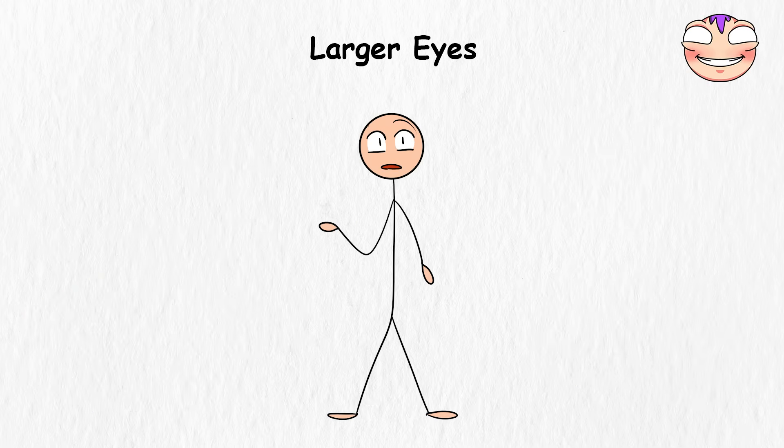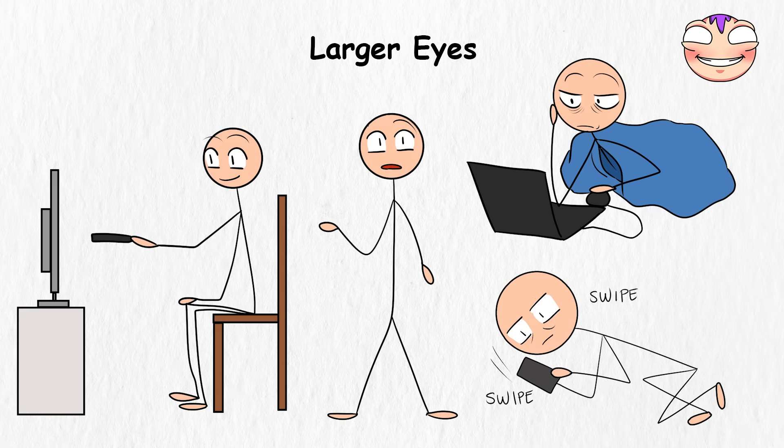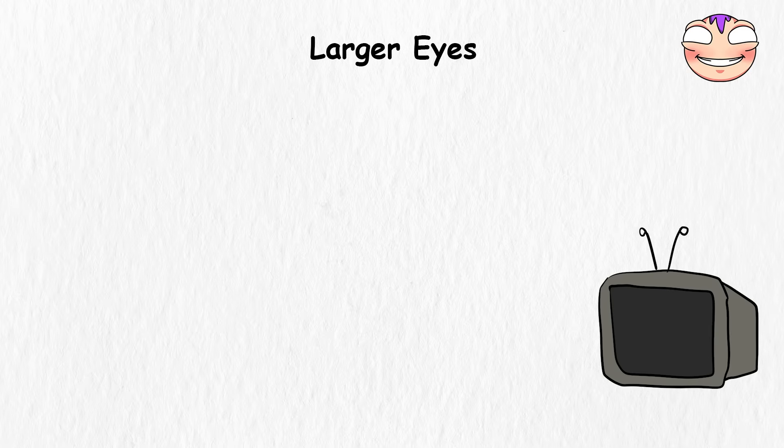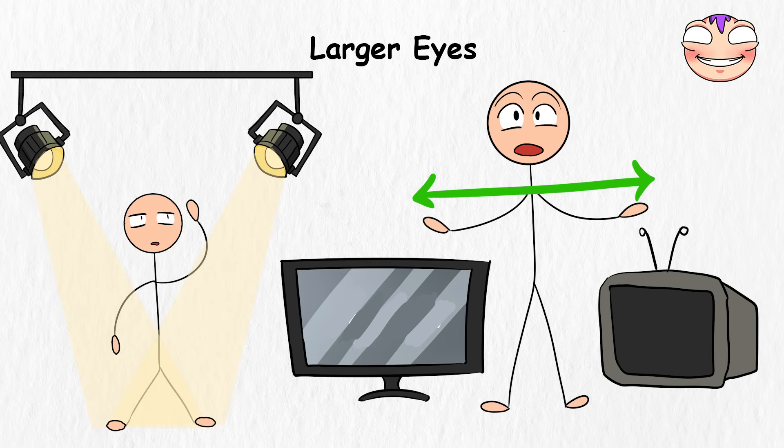First of all, humanity's relationship with screens is undeniable. From binge-watching your favorite shows to endlessly scrolling, your eyes are always working overtime, so larger eyes might evolve to handle these close-up tasks better. It's like upgrading from an old-school TV to an HD widescreen. More surface area means more light can be captured, leading to sharper vision in dim settings.